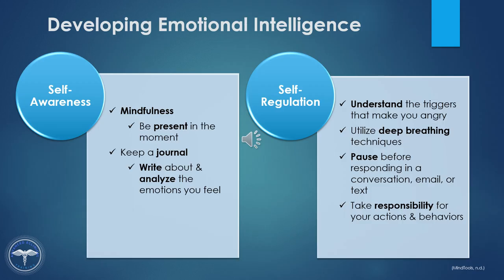Now that we know what emotional intelligence is and its qualities, let's discuss how we can develop it ourselves. To increase self-awareness, try learning about mindfulness — focusing on the present moment, including how you're feeling. You could try keeping a journal and writing about the emotional situations you experience from day to day. You also need to understand your strengths and weaknesses, so take time for self-reflection. Ask for feedback from your boss, friends, and colleagues to find out how you can improve further.